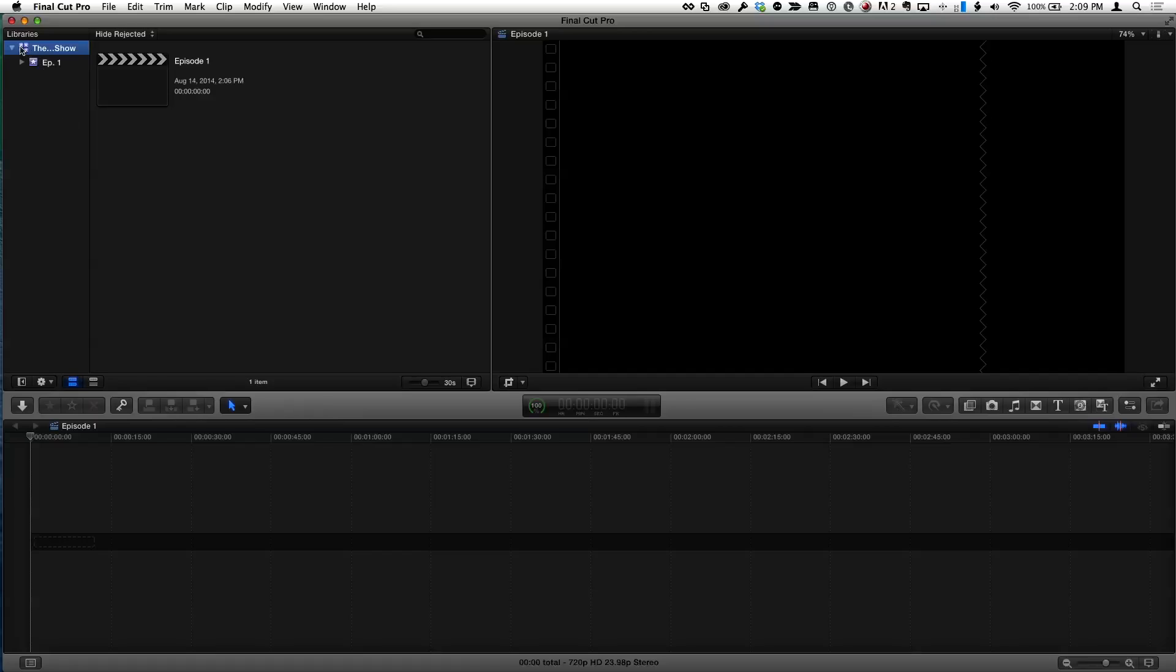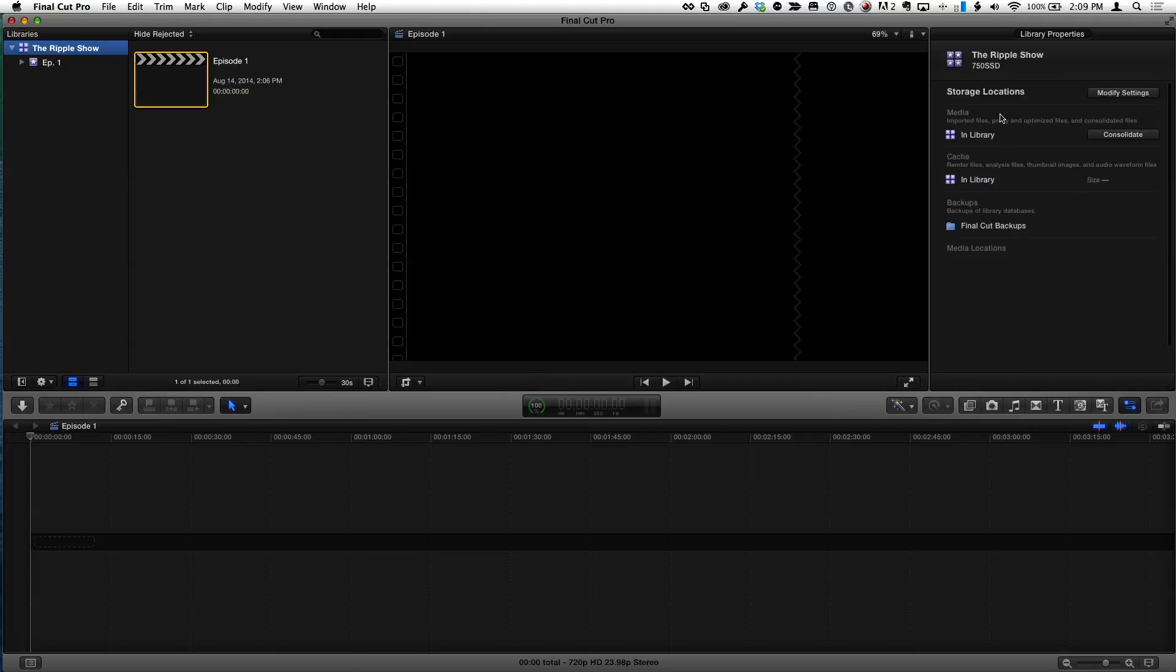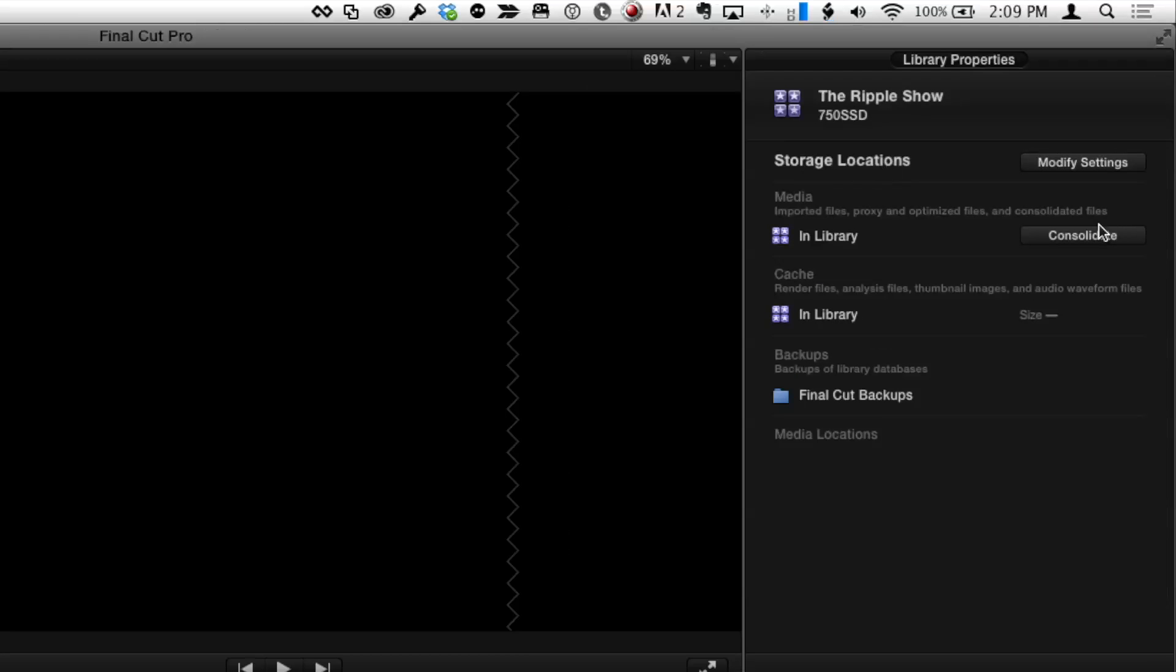The first is from scratch, how do you set it up correctly. I've created a new library, and if I select it and go to the library inspector, we can see that it's set up currently to place all the media including original and any transcoded media in the library. That library exists on this machine in the movies folder.